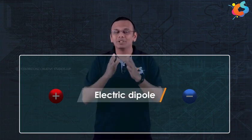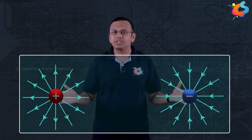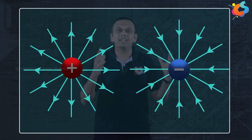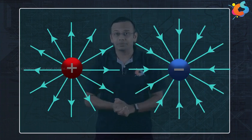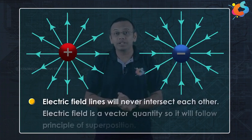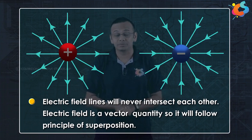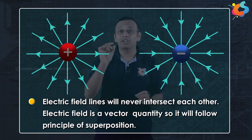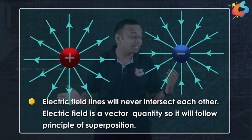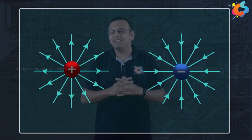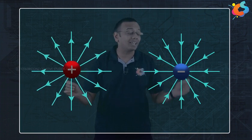What will happen if we have a system with both a positive and a negative point charge of the same magnitudes? This type of system is also called an electric dipole, which we will study in more detail in later videos. The electric field lines of both charges will not simply remain the same and intersect everywhere. Electric field is a vector quantity and always follows the principle of superposition, so the net field at any point is the vector sum of the fields of the positive and negative charge. The electric field lines drawn should represent this net electric field.